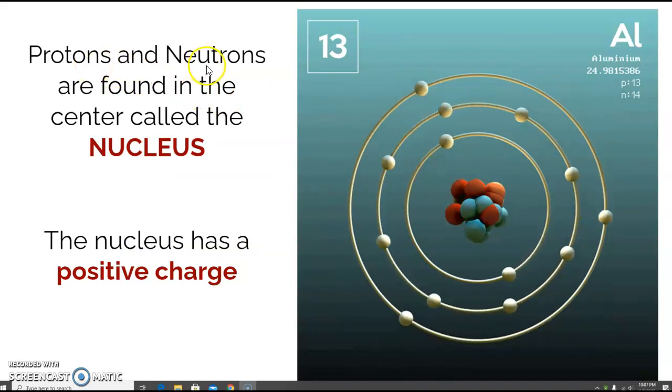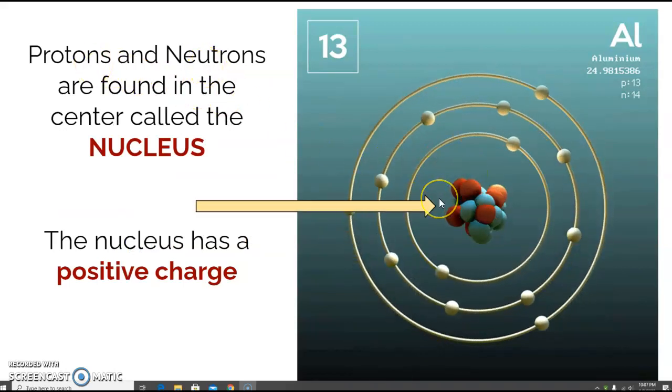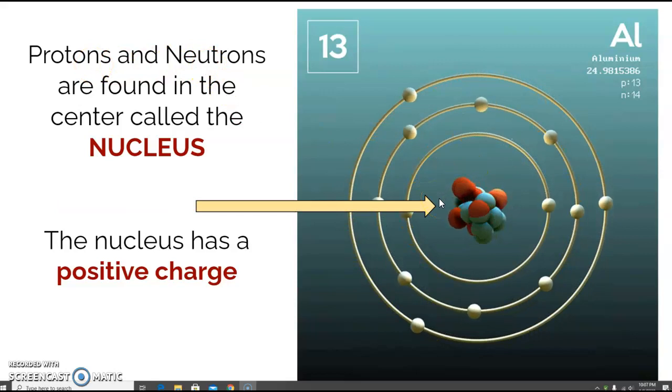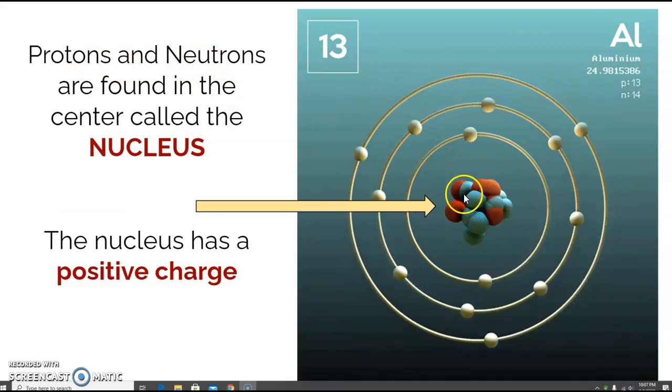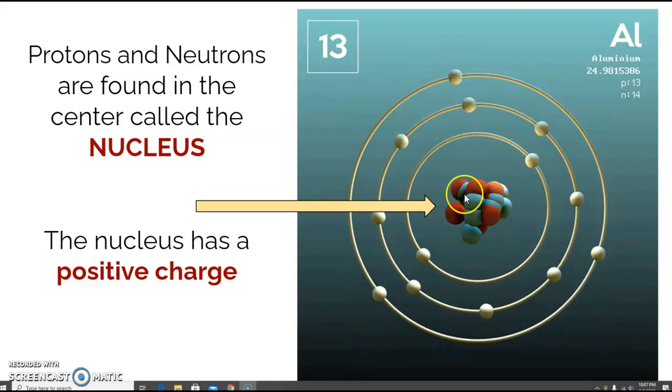Those protons and neutrons are found in the nucleus of the atom which is in the center, and this nucleus will have a positive charge because all the protons are in there.